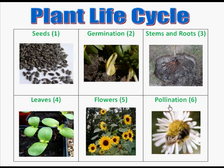The sixth stage is pollination, and here we see a bee who is pollinating this flower. And the plant life cycle starts all over again with seeds.